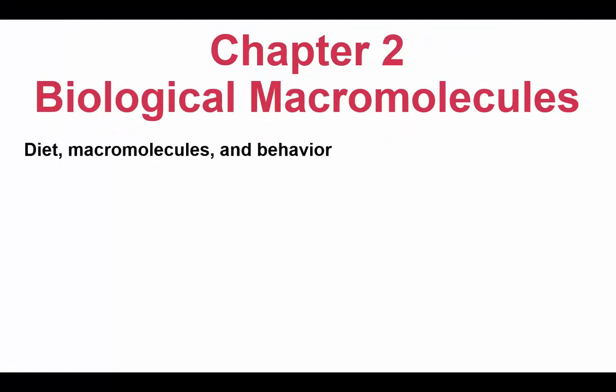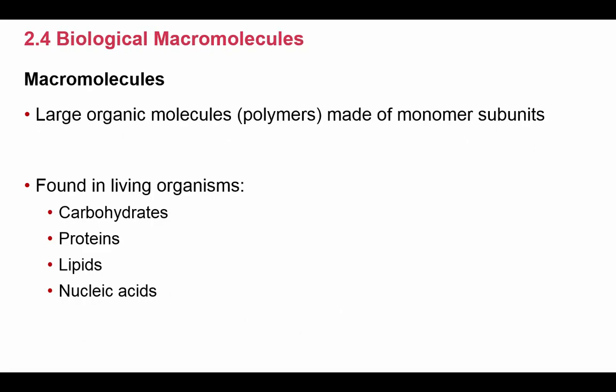This takes us to our second major section of chapter 2, which is section 2.4, where we're going to look at our biological macromolecules. What is a macromolecule? Objective number one says to define polymer and monomer. Macro means big, so a macromolecule is a big molecule — it's the same thing as a polymer, which is a large organic molecule.